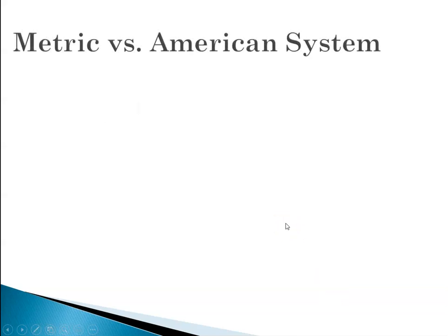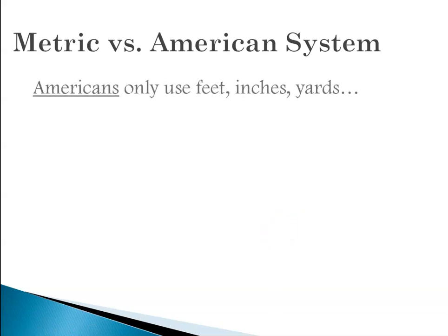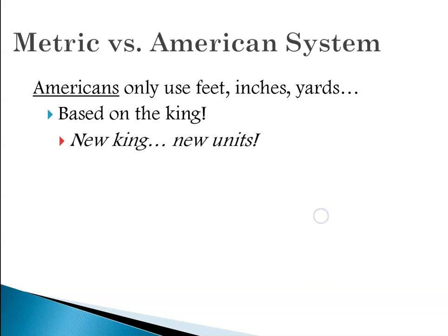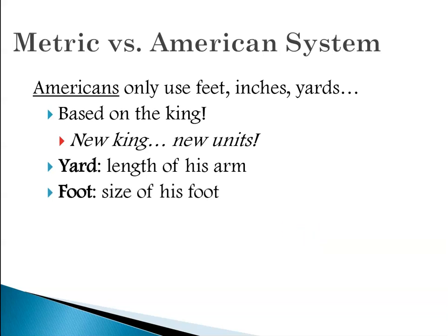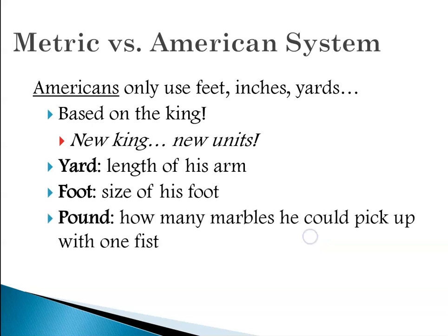So let's go back a little bit and talk about the metric system versus the so-called American system. Americans use only feet, inches, and yards and that system dates back to colonial times when everything was based on the king. Every time there was a new king you had new units. For instance, the yard measurement was the length of the king's arm, the foot was the size of the king's foot, and a pound was how many marbles the king could pick up with one fist.